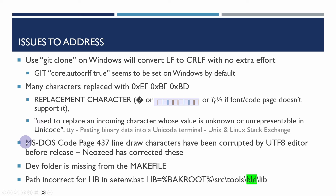What appears to have happened is that MS-DOS code page 437 line draw characters have been corrupted by a UTF-8 editor before the release. NeoZ has corrected a number of these and replaced the byte sequence with an appropriate line draw character. There are also other issues: the dev folder was missing from the make file and it won't build properly without the lib path being modified to add the BLD folder. I'm going to show how to check out the source code from GitHub making minimal changes to build it close to the original binary 4.0.0 release.